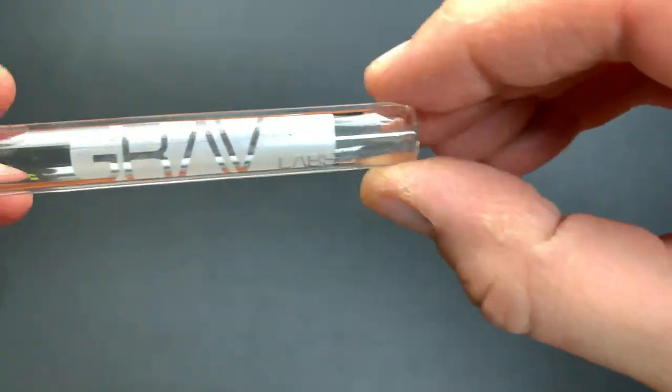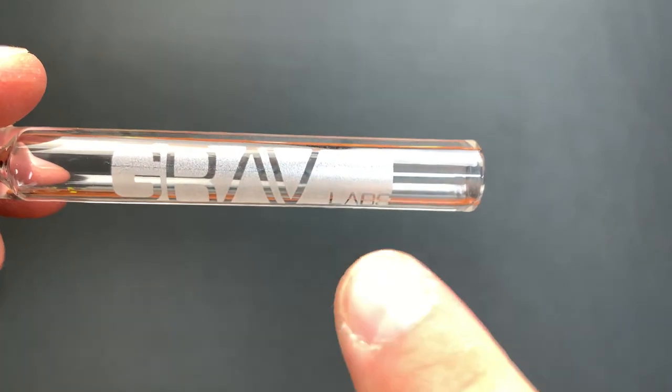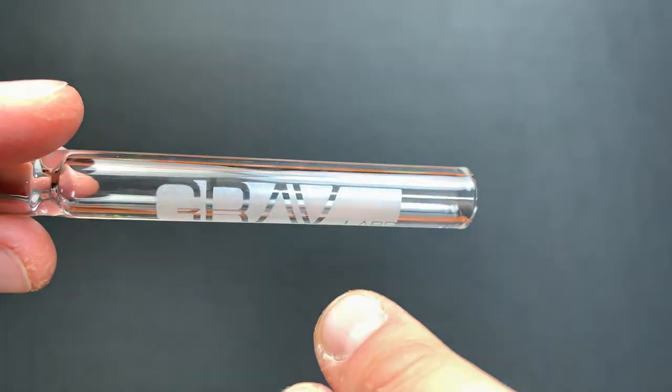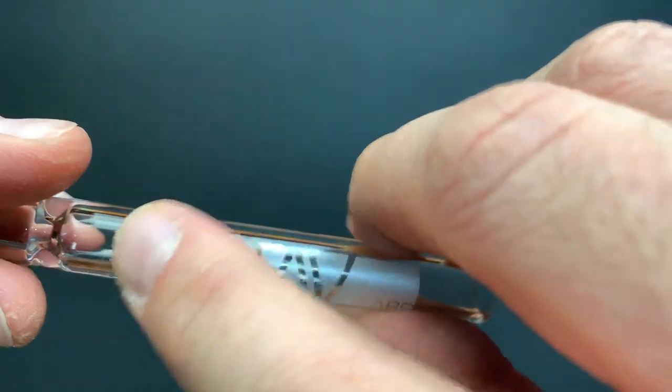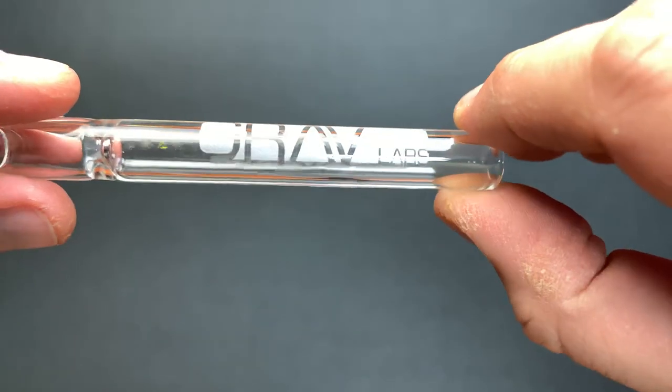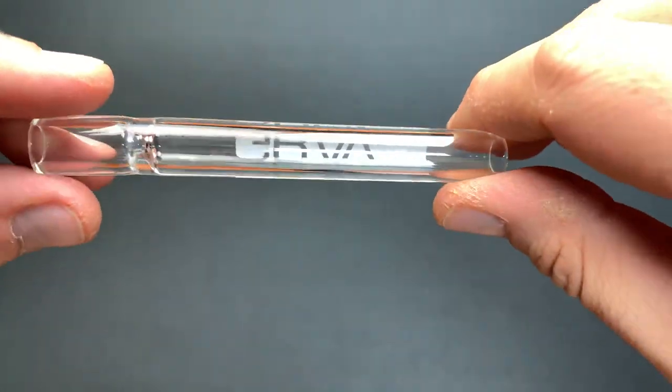We have here GravLabs etched in there, as you can see right here, and it's basically the inverse etching, which allows you to have the smoother part be the actual logo and the etched part be the background.